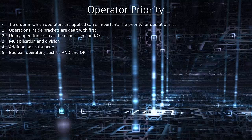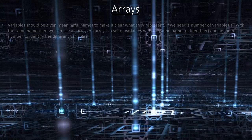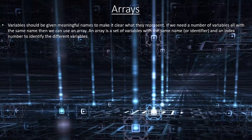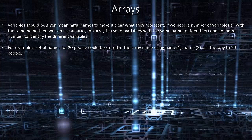Operator priority. The order in which operators are applied can be important. Priority is: first, operations inside brackets; second, unary operations such as the minus sign and NOT; third, multiplication and division; fourth, addition and subtraction; fifth, Boolean operators such as AND and OR. Variables should be given meaningful names. If we need a number of variables all with the same name, we can use an array. An array is a set of variables with the same name or identifier and an index number to identify the different variables. For example, a set of names for 20 people could be stored in the array 'name' using name[1], name[2], all the way to name[20].